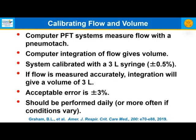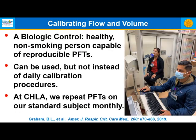Computer pulmonary function testing systems measure flow with a pneumotach. The computer integrates flow to give volume, and the system is calibrated with a three-liter syringe — plus or minus 0.05% is acceptable for flow, and plus or minus 3% for volume. This should be performed daily in a pulmonary function lab or more often if conditions vary. A biologic control — a healthy, non-smoking person capable of reproducible PFTs — should also be used, though not instead of daily calibration. At Children's Hospital Los Angeles, we repeat PFTs on our standard subject monthly.